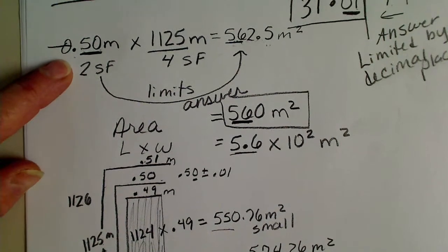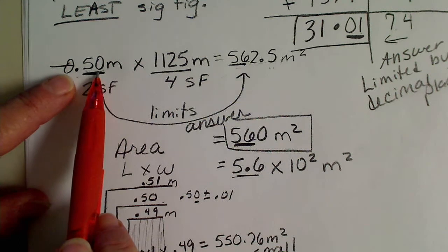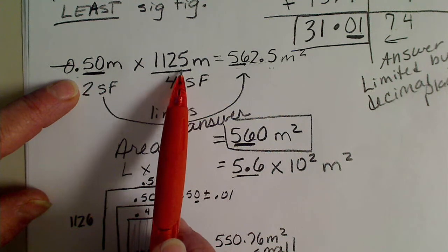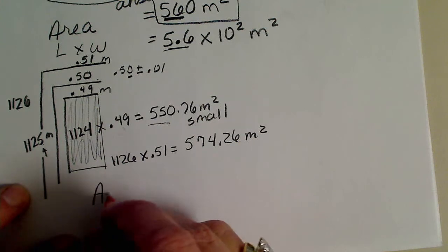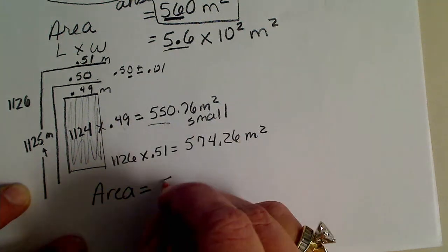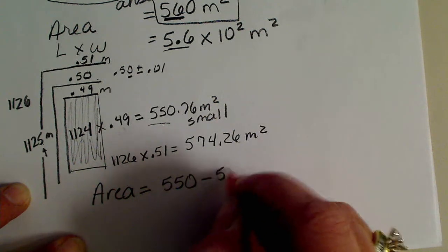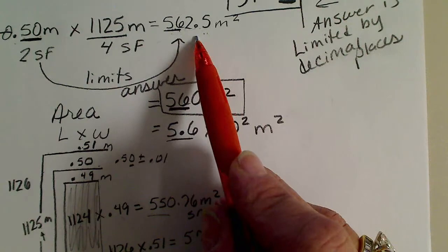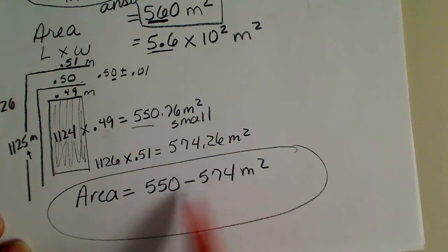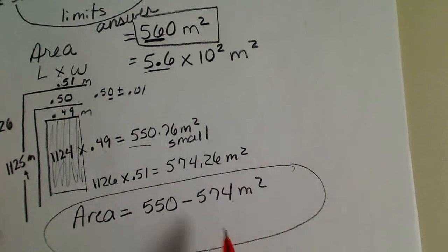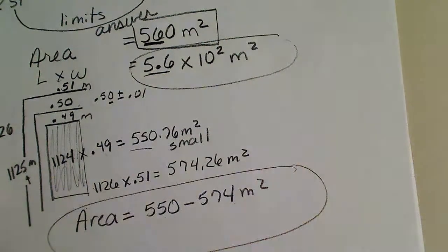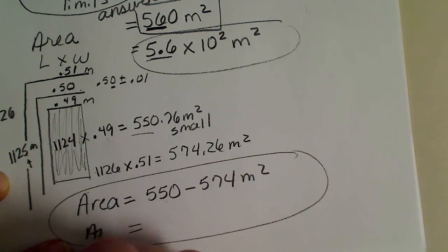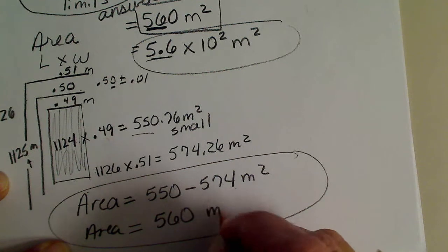From these measured values, because we have determined and reported them to the given significant figures, we have an error in our area. All we know is that our area is somewhere between 550 and 574 square meters. Reporting an area as 562.5 square meters when in reality we have a relatively large uncertainty would be incorrect — that's why we would report our answer the way we do. It's safe to say our area is 560 square meters, which is plus or minus 10 square meters. We only know this measurement with certainty to the tens place.